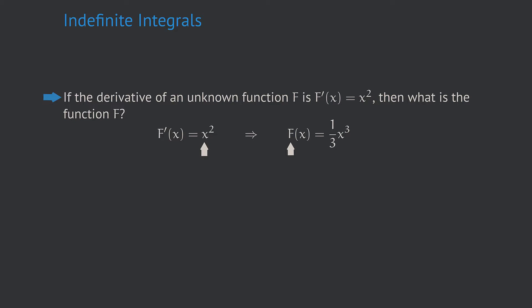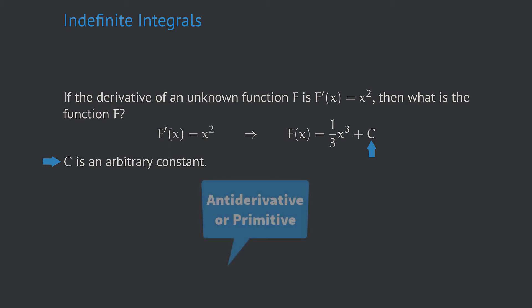As always in mathematics, we want to be as complete as possible. Is this capital F the only solution, or is there any other capital F which also works? Thinking about differentiation rules, we can additionally add a constant to this function, because when differentiating, that constant turns into zero. This gives us a complete bunch of functions, because C can be any real number. We call functions like these — which have a given function as their derivative — antiderivatives or primitives of the given function.